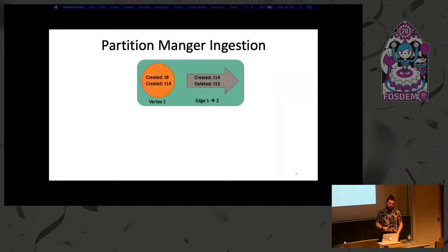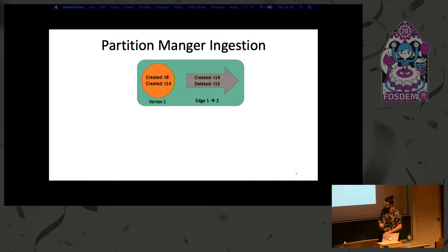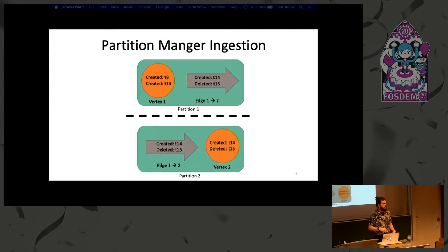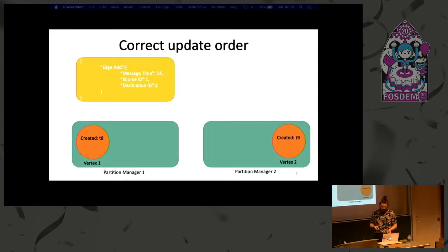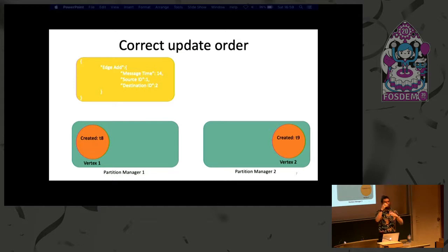If we dive into one of these partitions, they'll have a set of vertices and edges, and all of these will have some history appended to them. So in this case this vertex was created at time 8, then had some update appended at time 14. This edge was created at time 14 and will be deleted at some point later on. Because we're split across several partitions, we use an edge partitioning algorithm. One thing that's really interesting about this type of history is that now all of our updates become additive. Even if a delete happens first and an add happens after, as long as we keep this chronological list, we can just slot them into the correct position and always end up with the right graph.